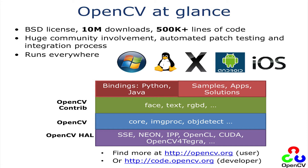So this is OpenCV at a glance. As most of you probably know, it's under a BSD license. It's gone over 10 million SourceForge downloads. There are many more downloads because it's included in Linux distros and a lot of things in Git we can't really track. It's grown over half a million lines of code.